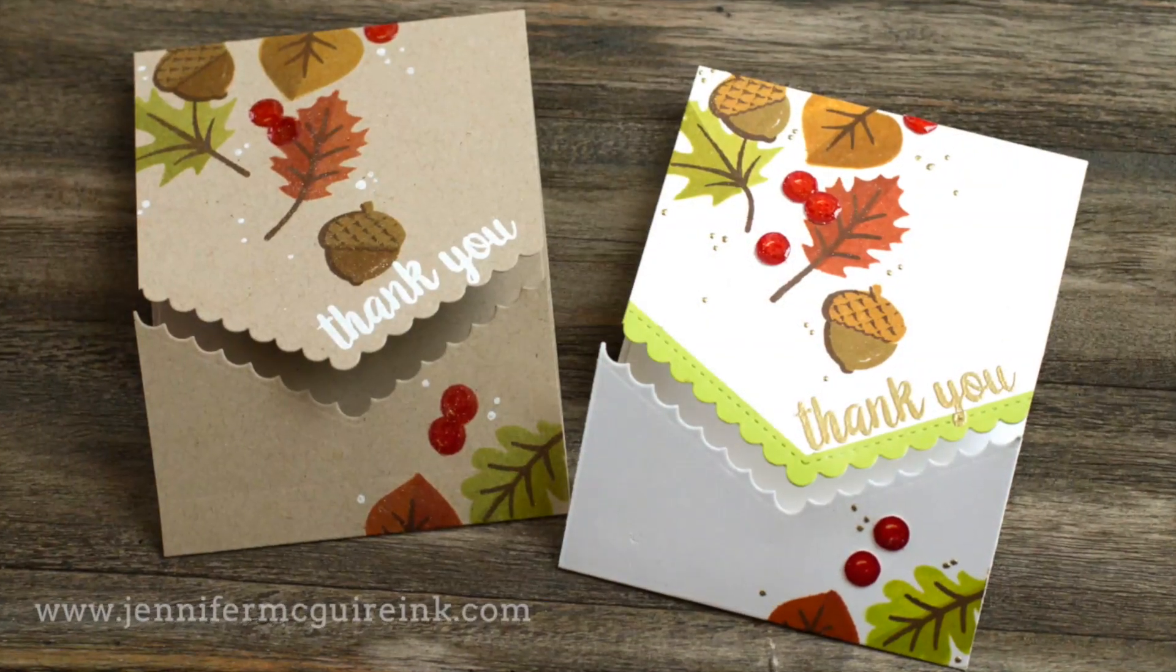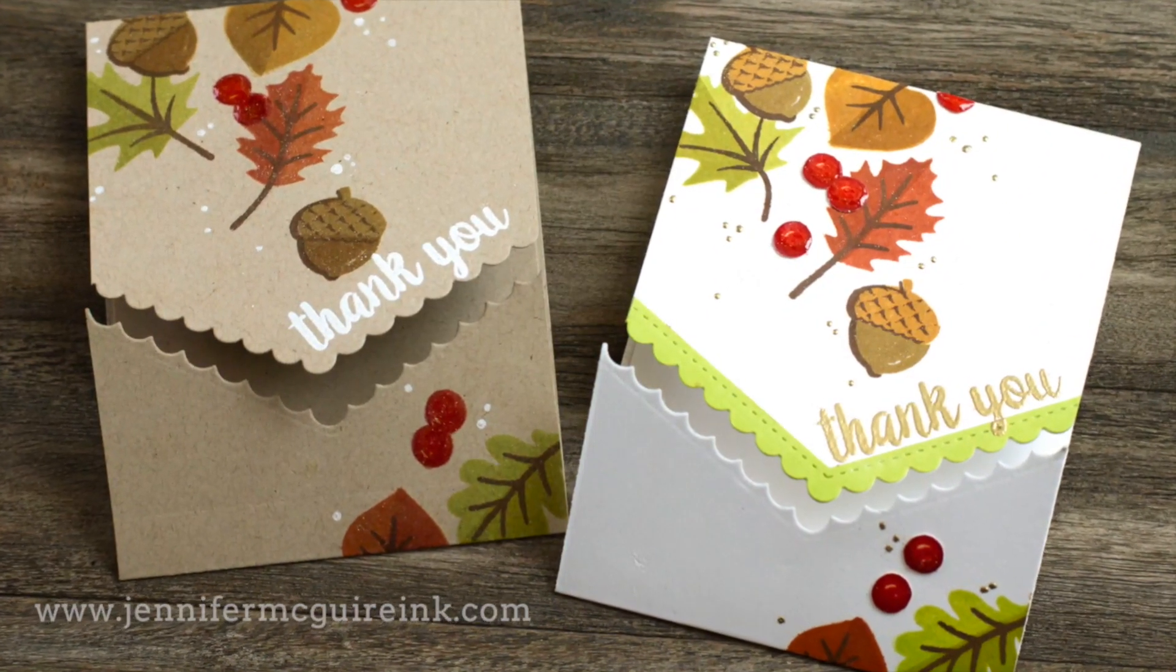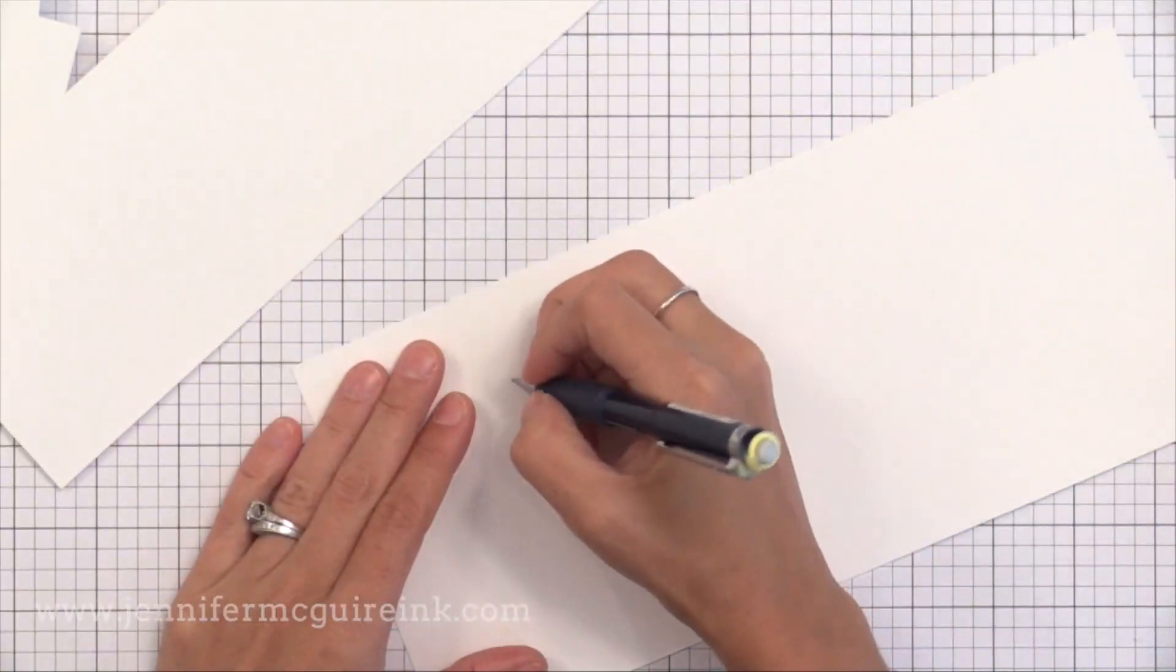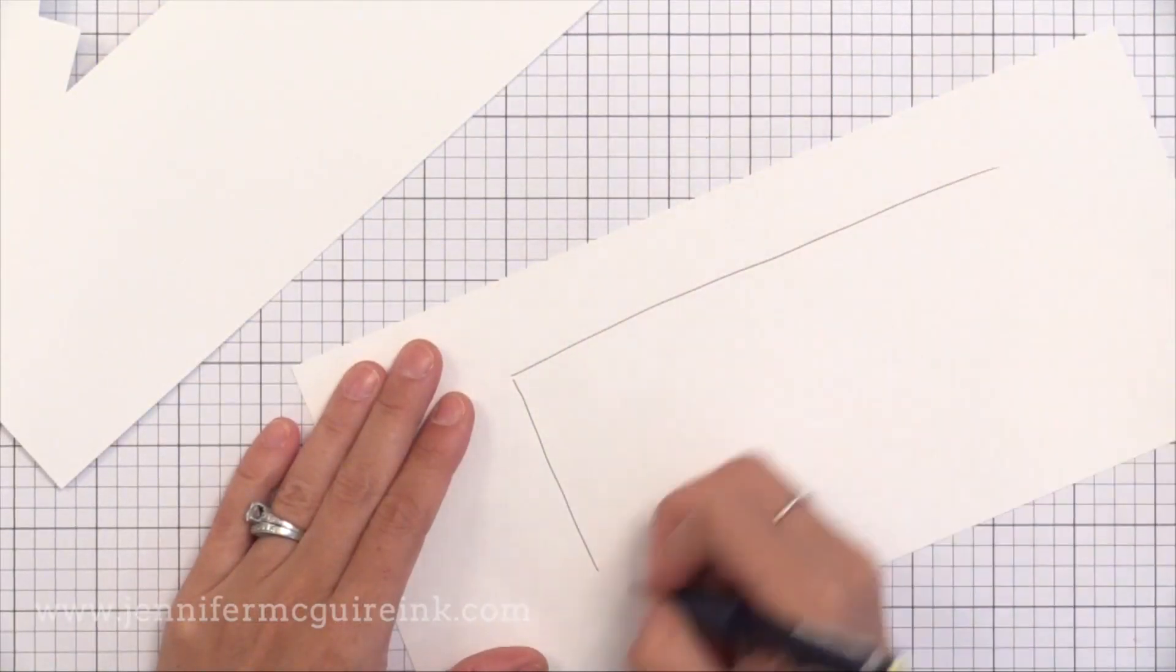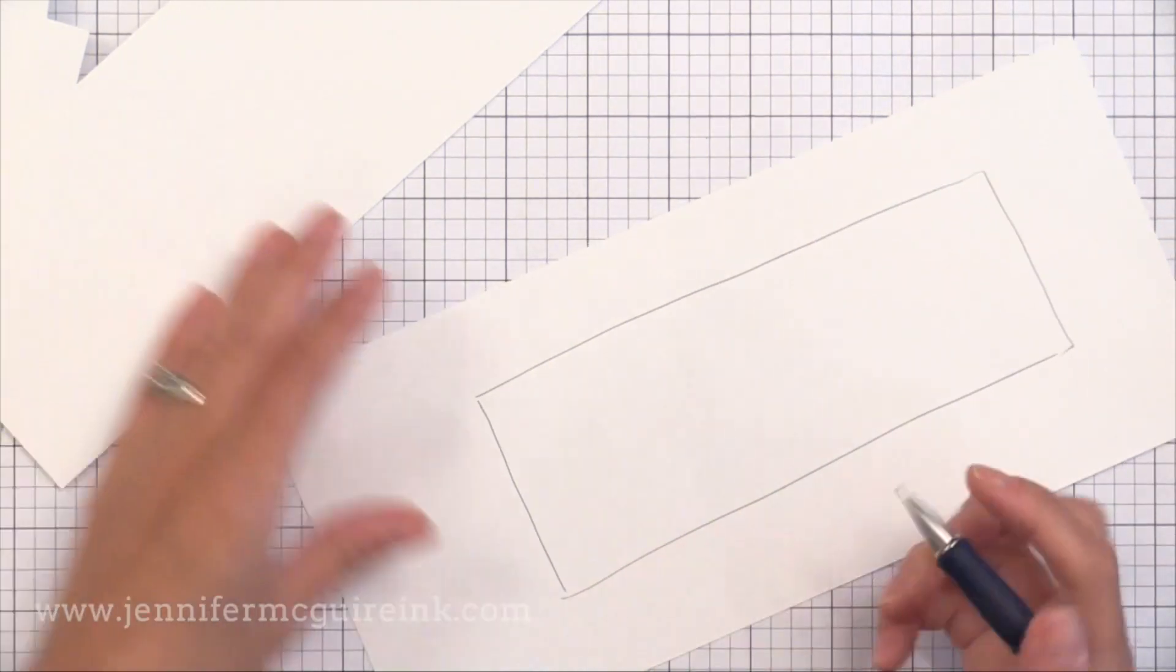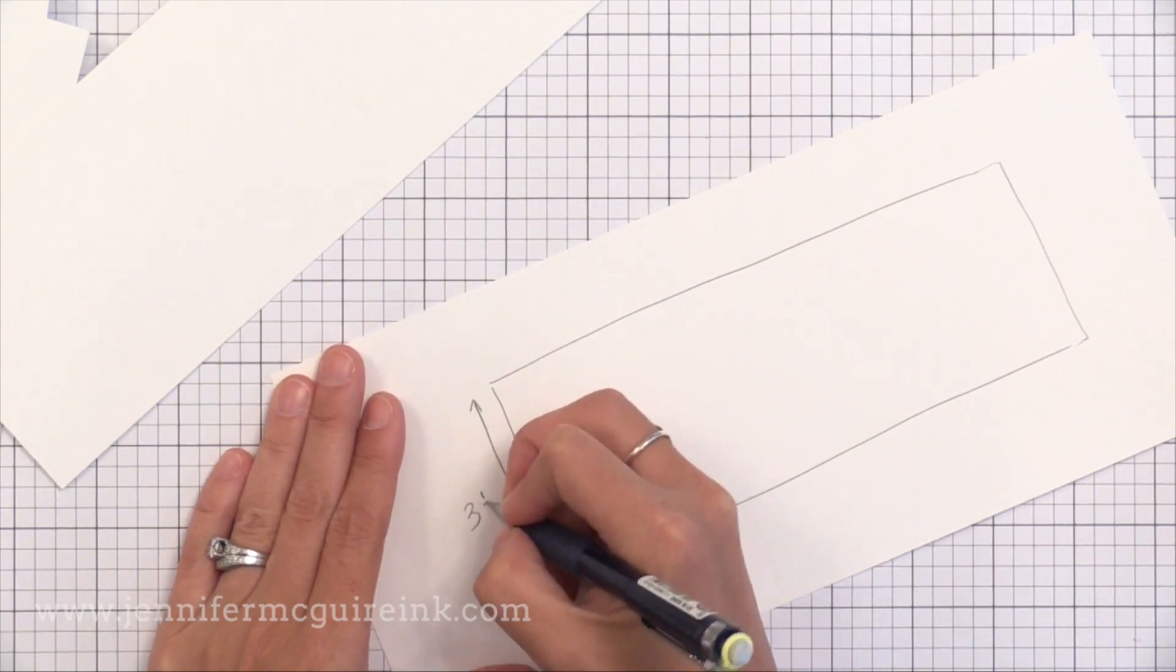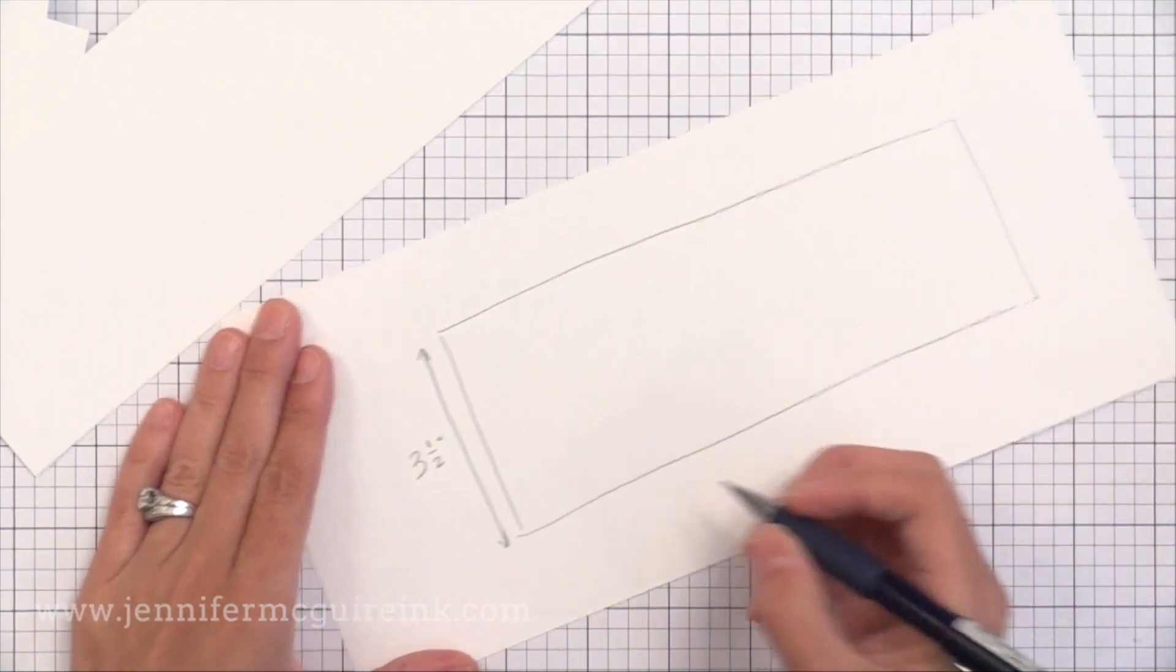Next we need to get our card stock cut and scored in the right places. I'm making smaller cards today that are about three and a half by four and a half. So to create these cards you need to cut and score just right. And I did a lot of playing around and engineering to figure out what worked best for doing this border die gatefold design.